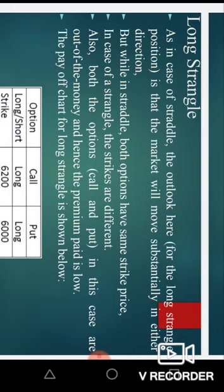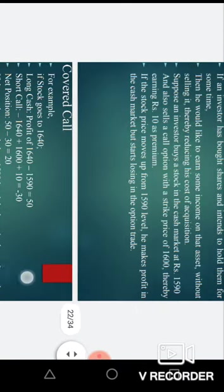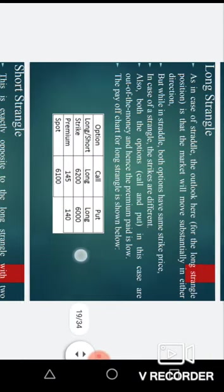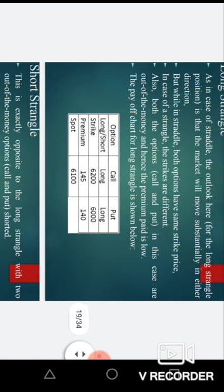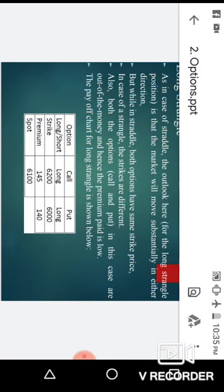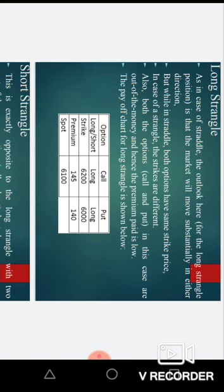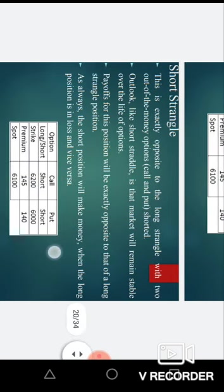In the strangle we have different strike prices. Also, both options in this case are out of the money, and hence the premium paid is very low. Looking at the payoff chart for the long strangle: the premium for the long call is only 145 and for the long put is only 140, so the total premium paid is 285.